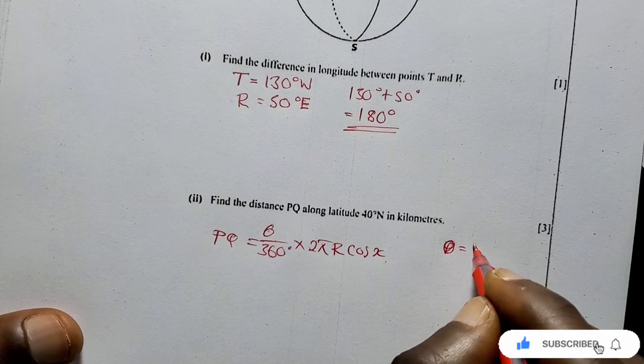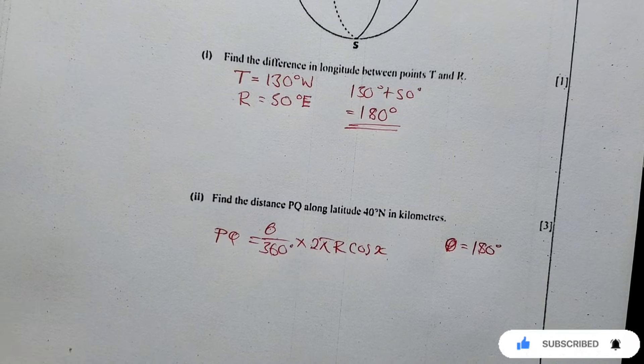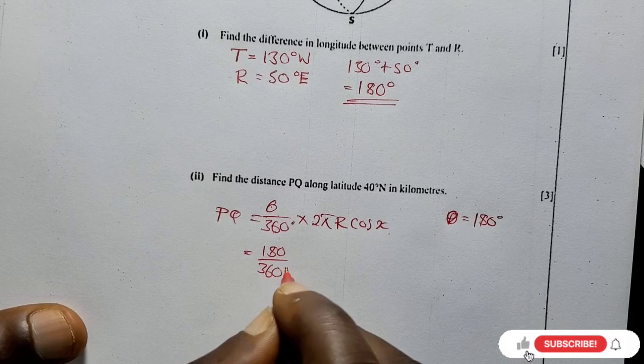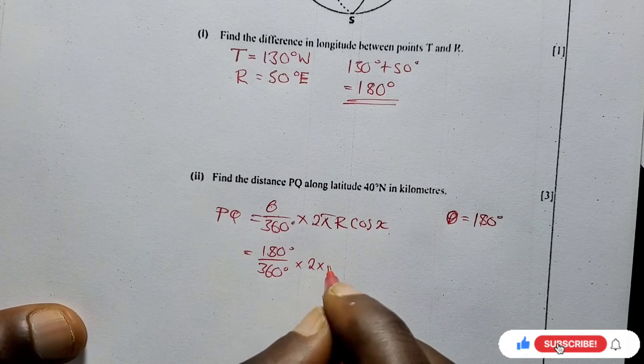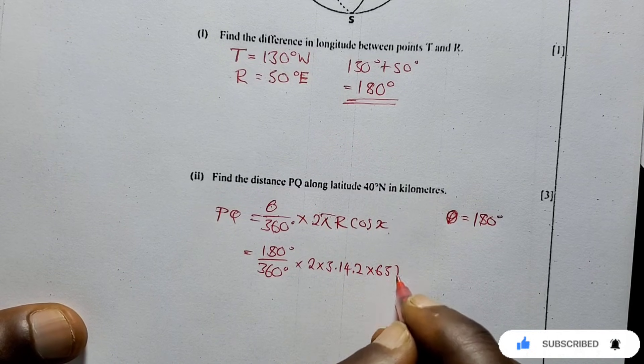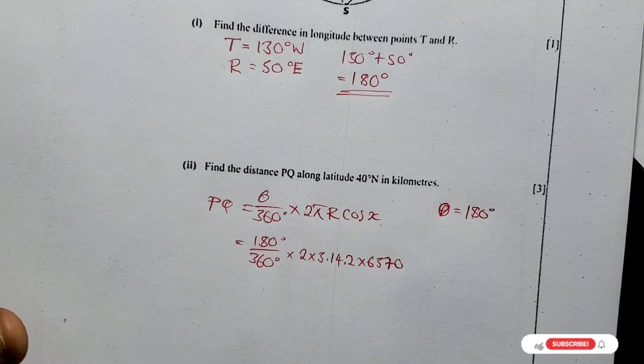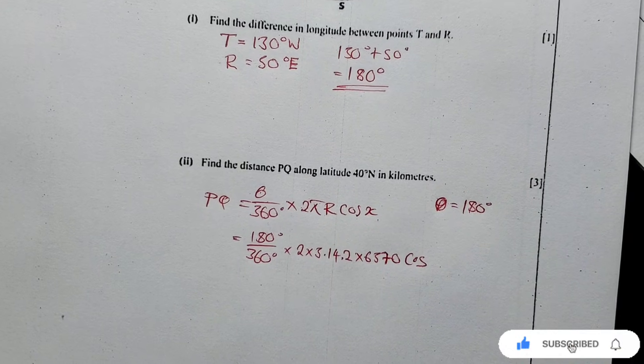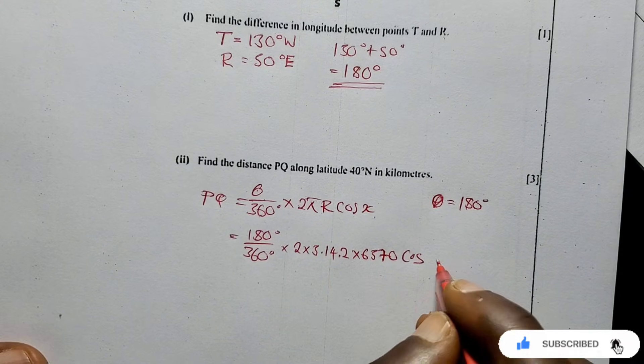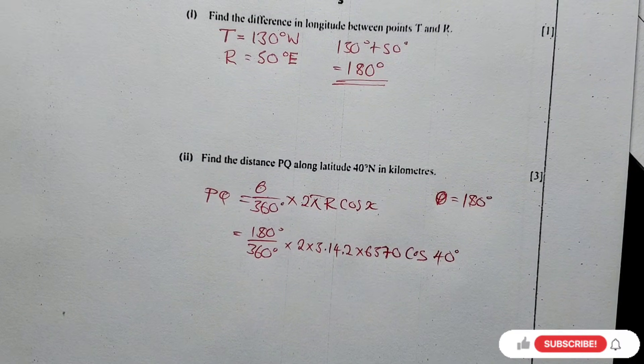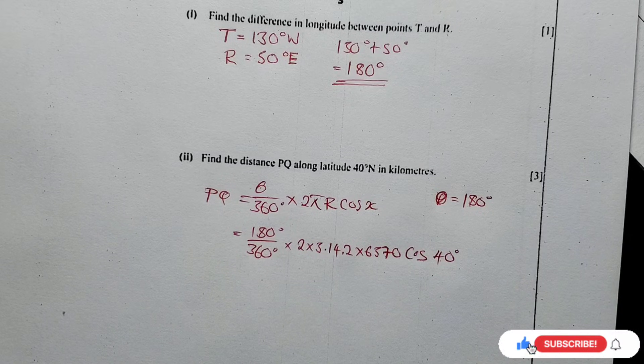So it's just a matter of substituting here: 180 over 360 degrees times 2 times 3.142 times the radius of the earth which is 6370, cos - what is our x? Our x is the latitude in which PQ is, 40 degrees north. So we're going to just write 40 degrees.